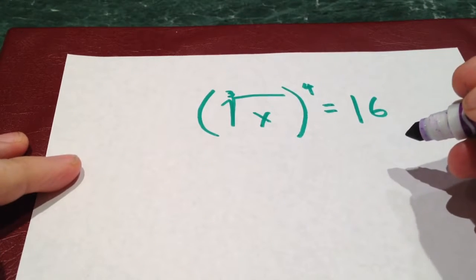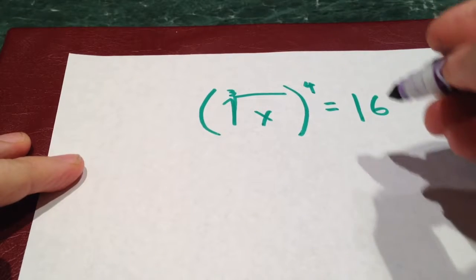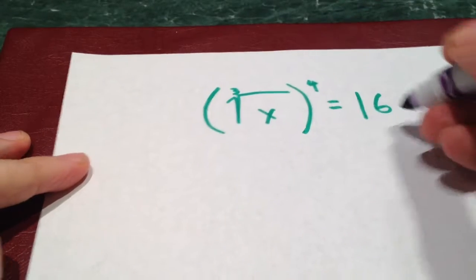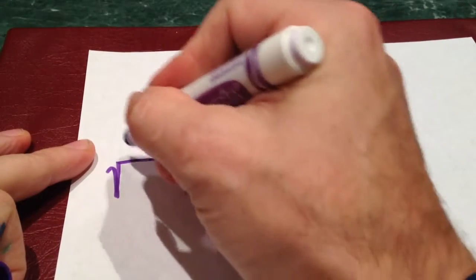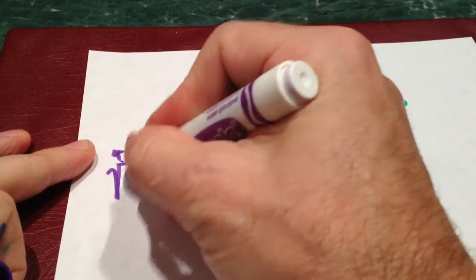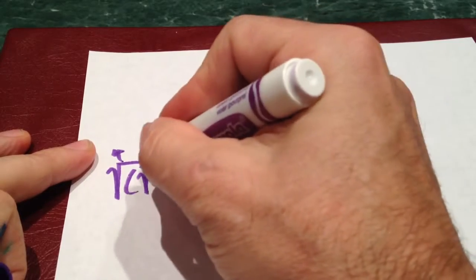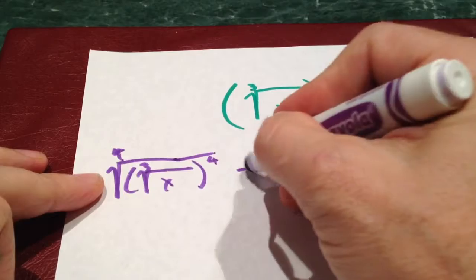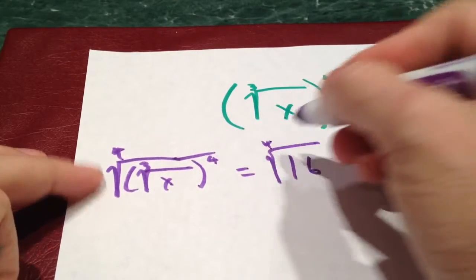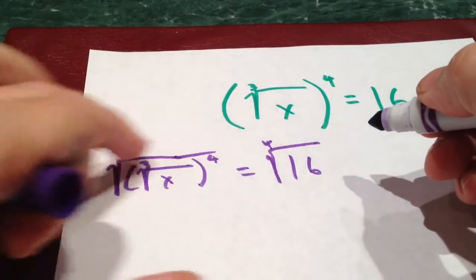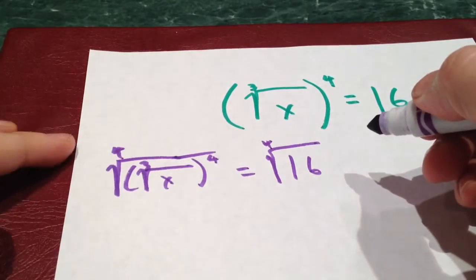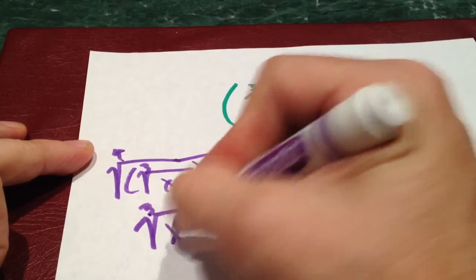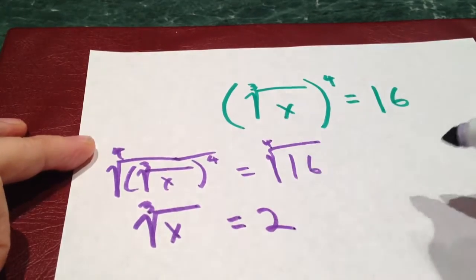One way is that we can take the fourth root of both sides. Let me take the fourth root of this whole thing. This whole thing equals the fourth root. The fourth root and this raised to the fourth are inverse operations, so they cancel each other out. I'm left with root 3x equals 2.